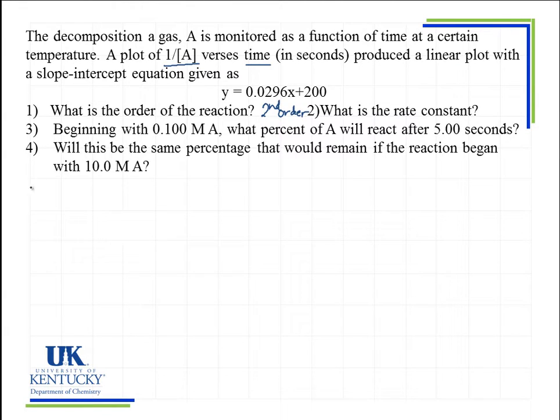The integrated rate law for a second order reaction is 1 over A is equal to KT plus 1 over A naught. That's Y equals MX plus B. So the fact that you get a straight line and that this is the equation of the line tells me it's second order.